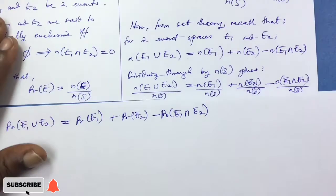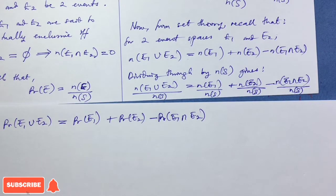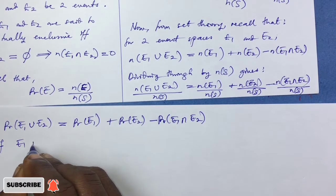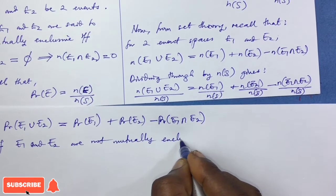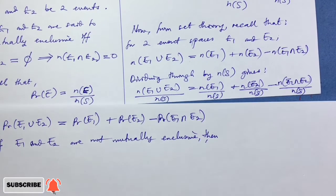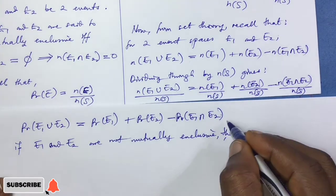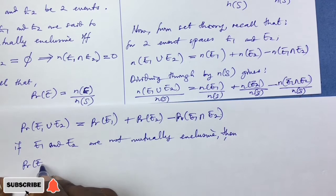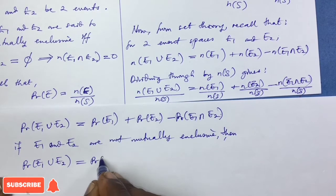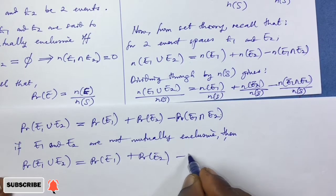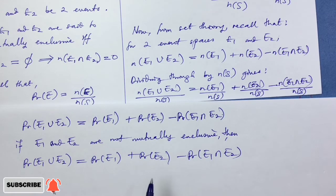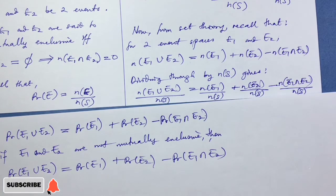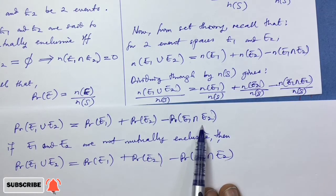If E1 and E2 are not mutually exclusive, then the equation remains: P(E1 ∪ E2) = P(E1) + P(E2) − P(E1 ∩ E2). That is, if these two events can occur at the same time, the probability of either of them occurring remains as derived.